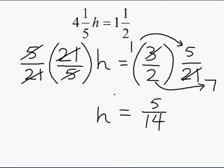So now we can say that h is equal to 5 14ths. So if we were to multiply 4 and 1 5ths times 5 14ths, we would come up with a product of 1 and 1 half. So h is equal to 5 14ths.